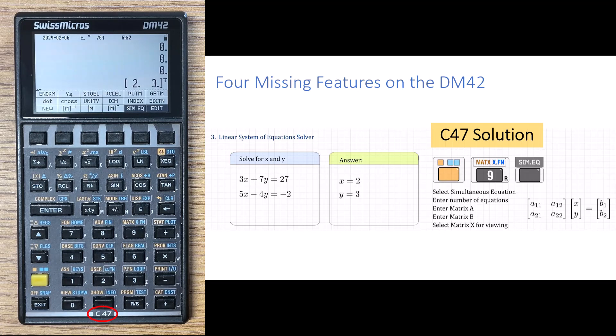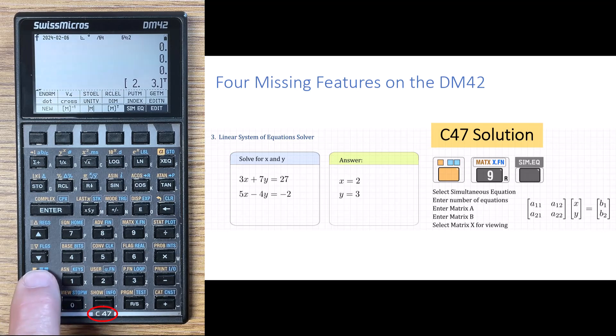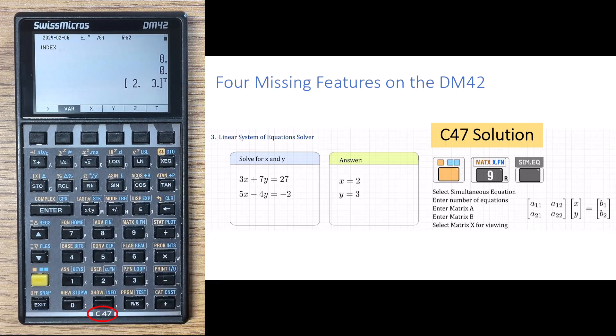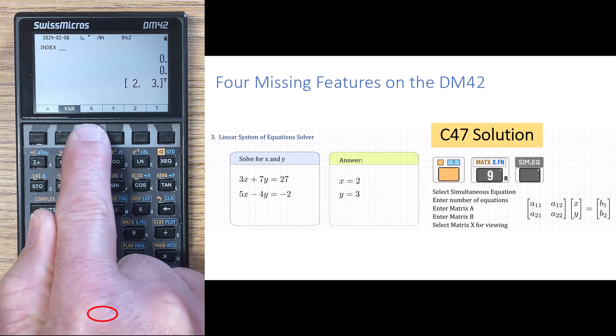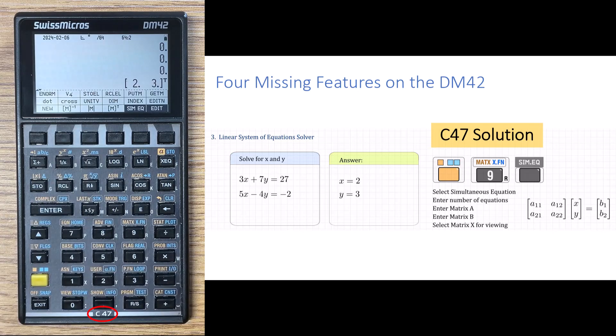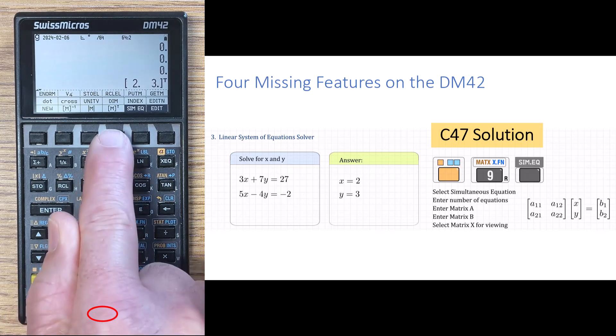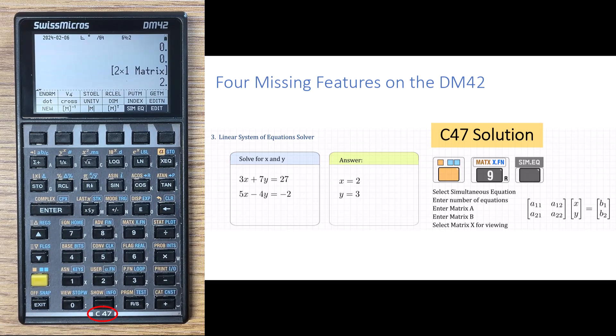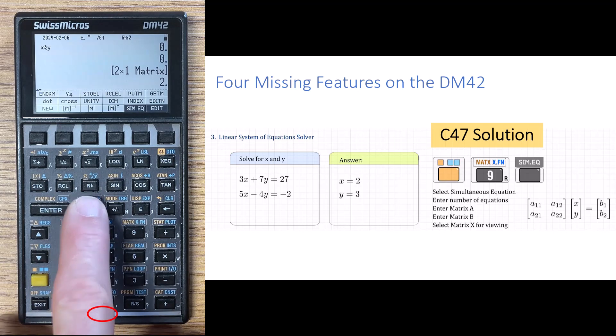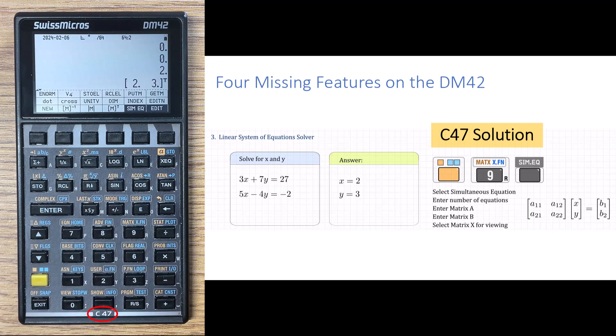So the first thing we have to do is say that we're going to index this matrix. So that's a shift F5 function, and then we say which matrix. So the matrix on stack level X is the one I want to index. Then I can recall elements, and when I enter this, it'll automatically point to the first element in the matrix. So now I can recall the first element by doing a double shift F4 that recalls the two. And now I want to recall the other element. So I'm going to do an X exchange Y to get the stack to put this matrix back down where I want it.